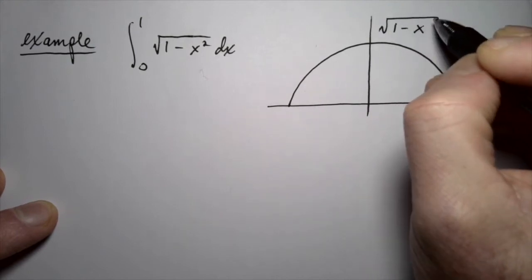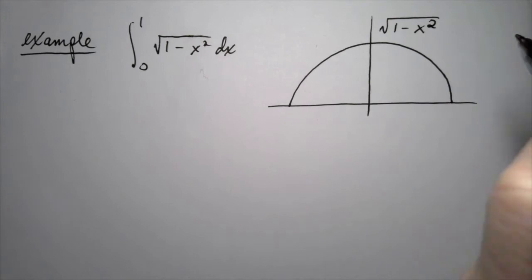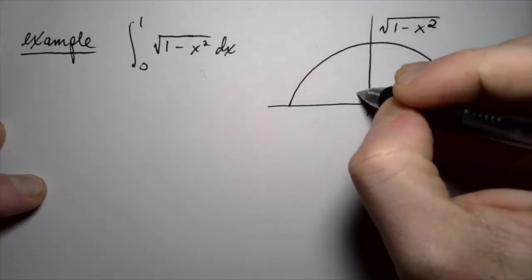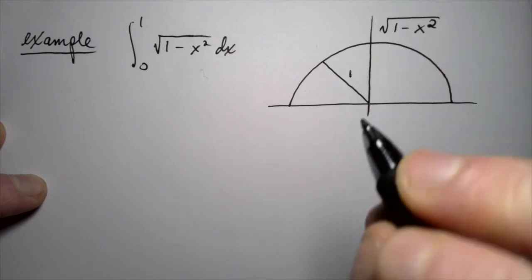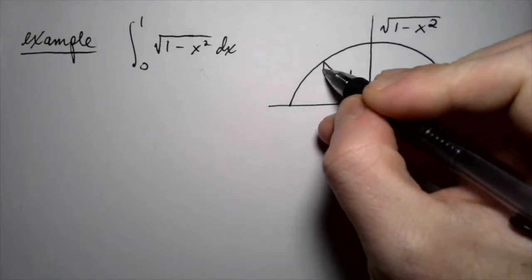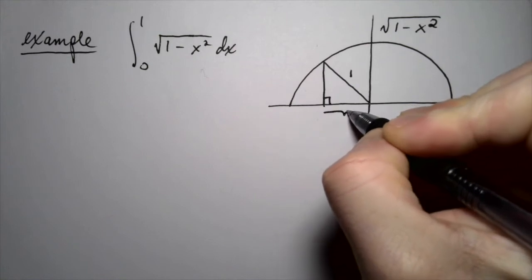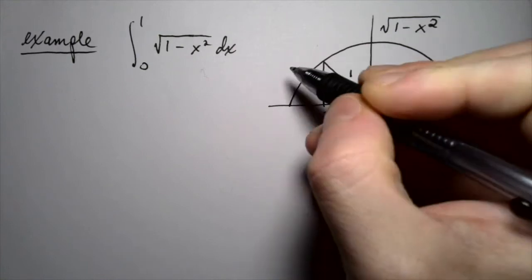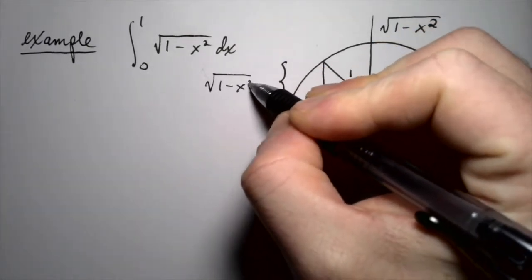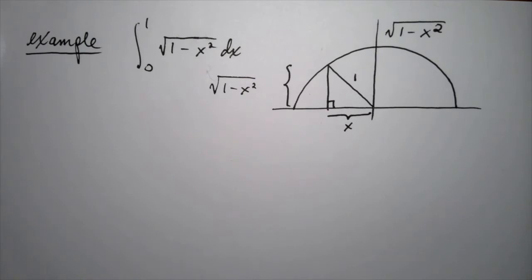You can derive that from the Pythagorean theorem. The height has to be the square root of the hypotenuse, which is 1, because it's a circle of radius 1, minus the corresponding x value if you're drawing some triangle. So, if this width is x, the corresponding height is going to be the square root of 1 minus x squared by the Pythagorean theorem. That's why this semicircle is the graph of the function square root of 1 minus x squared.